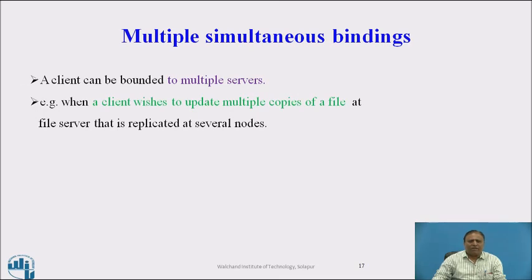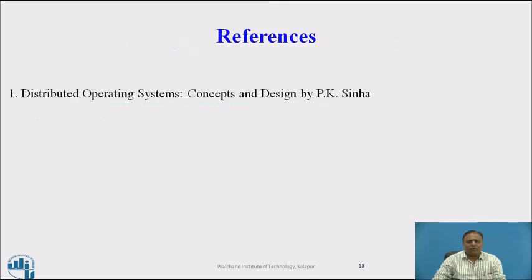Multiple simultaneous binding: a client can be bound to multiple servers simultaneously. For example, when a client wishes to update multiple copies of a file at a file server that is replicated at several nodes. This covers the concept of multiple simultaneous binding between a client and server.